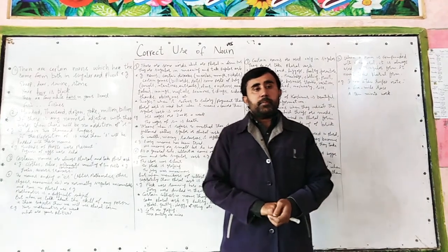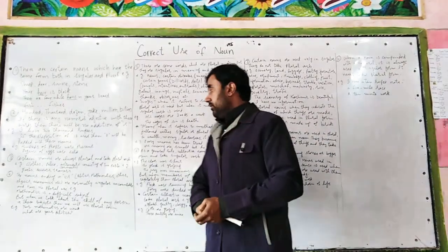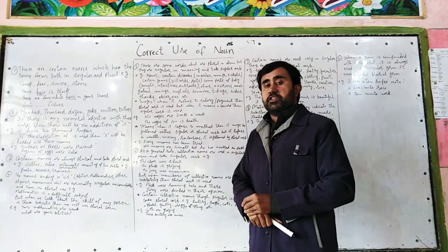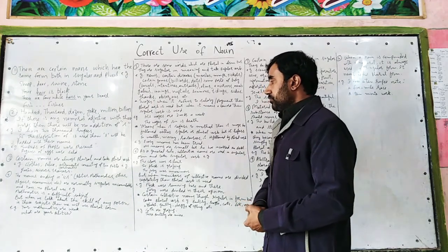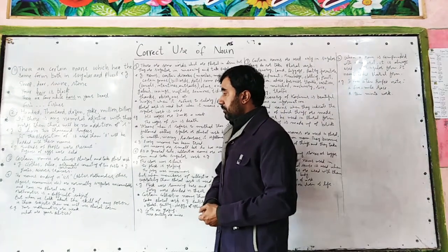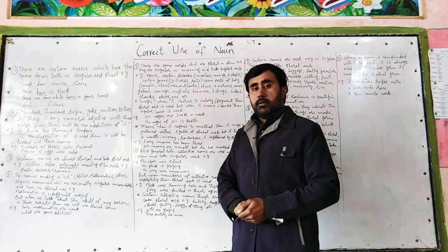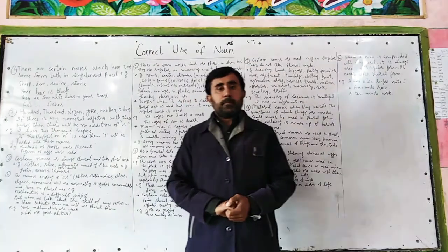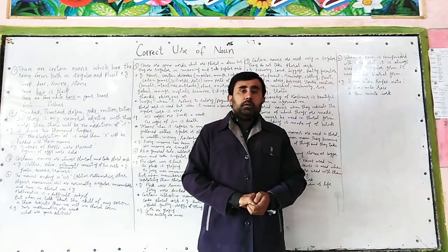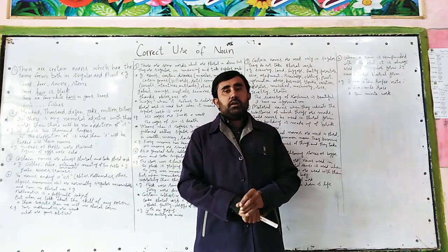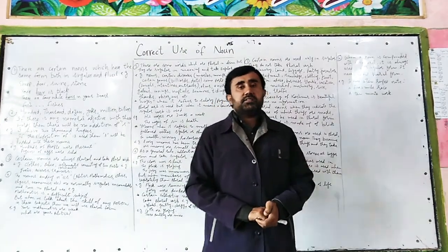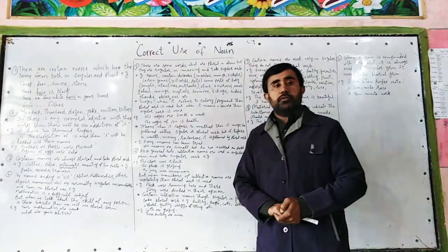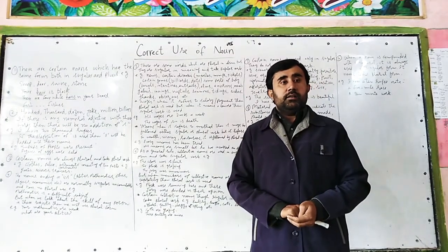We always use a plural verb with instruments or garments which consist of two parts. For example: glasses, trousers, scissors. 'My scissors are out of work' — 'my scissors is out of work' is wrong. 'My scissors are out of work.' 'My trousers are flexible.'